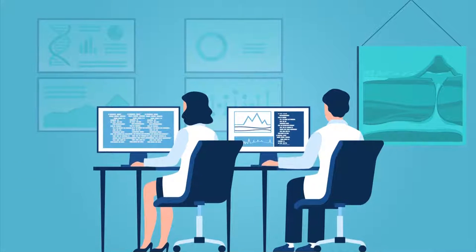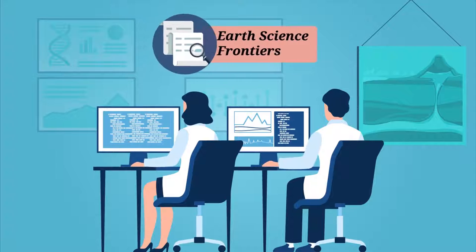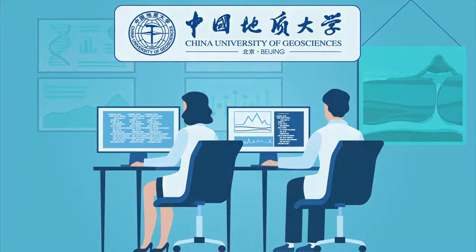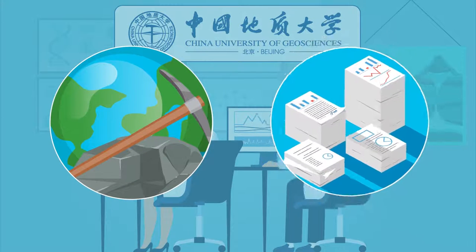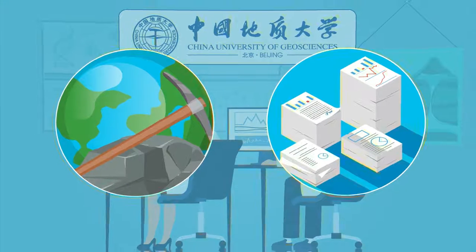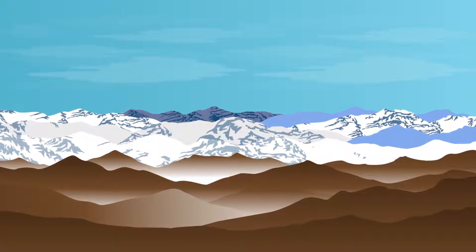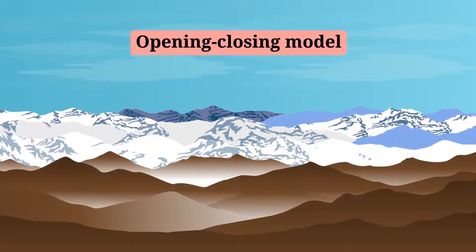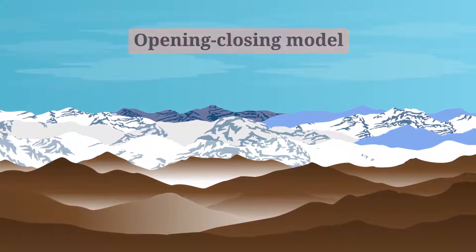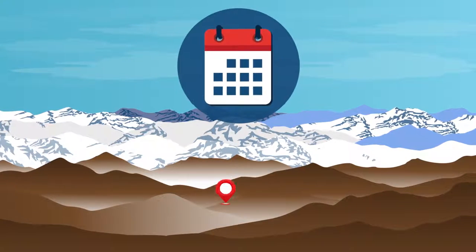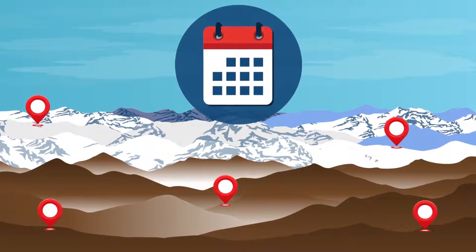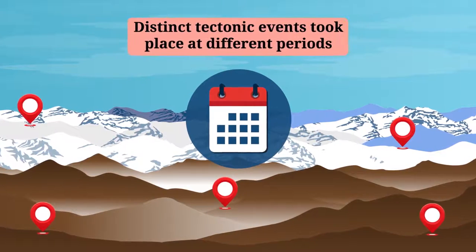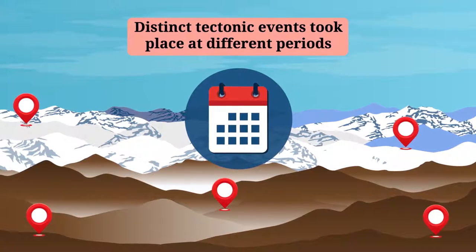Thus, in a new study published in Earth Science Frontiers, scientists at the China University of Geosciences used a new approach to explain the origin. The scientists used a new opening-closing model to study the geological boundaries of South Tibet. Using this model, the scientists were able to explain that these boundaries had originated from distinct tectonic events that took place at different periods.